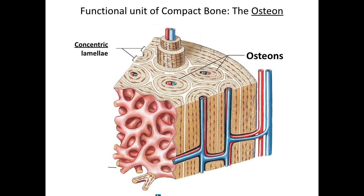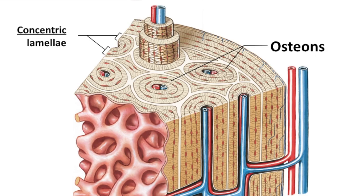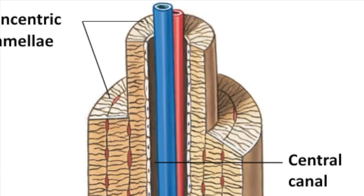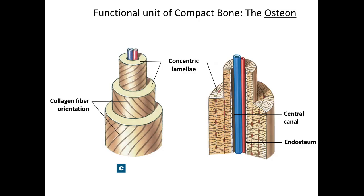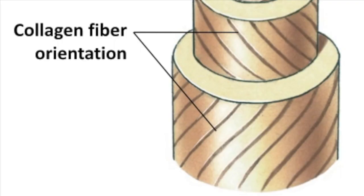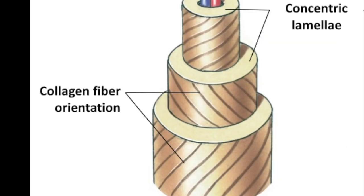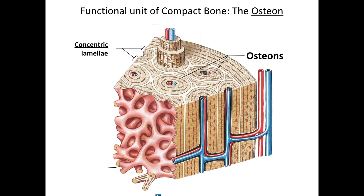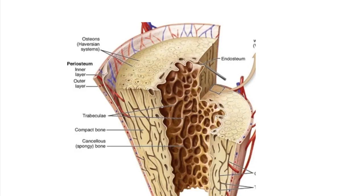Back to the osteon with its concentric lamellae: in the center is the central canal, through which blood vessels running longitudinally bring oxygen and nutrients to the living tissue in compact bone. Within a single lamella, collagen fibers and mineral crystals align and run in one direction; however, the fibers and crystals of adjacent lamellae always run perpendicular to each other. This alternating pattern is optimal for withstanding torsion or twisting stressors. Functionally, osteons are like miniature weight-bearing pillars whose arrangement also resists twisting forces.